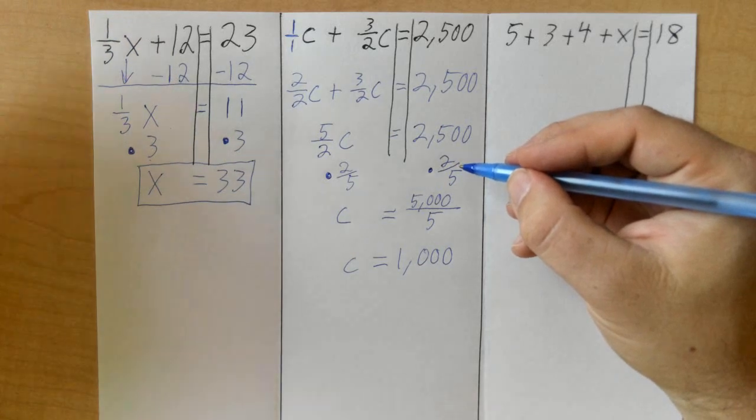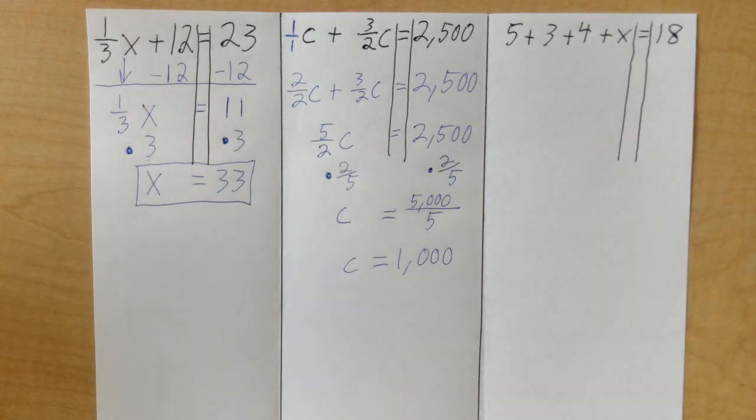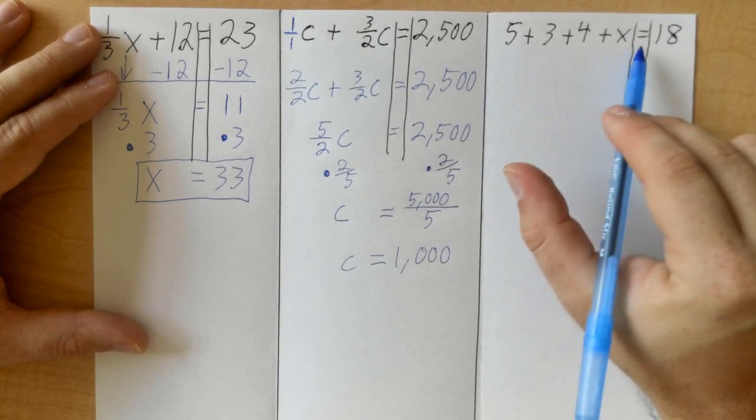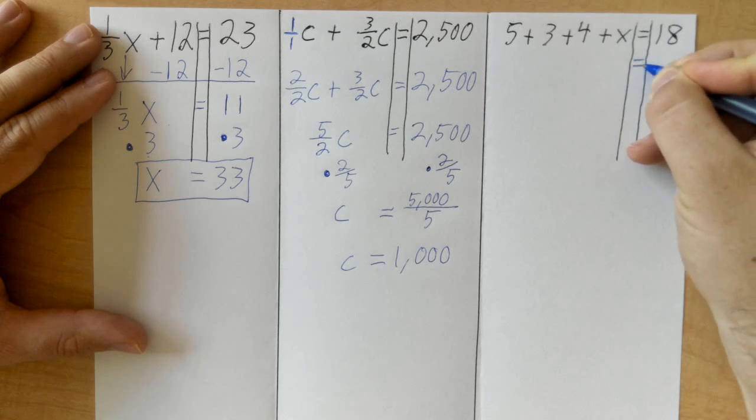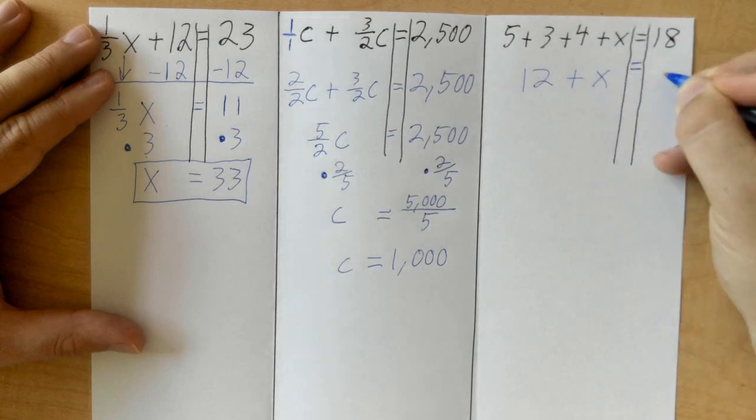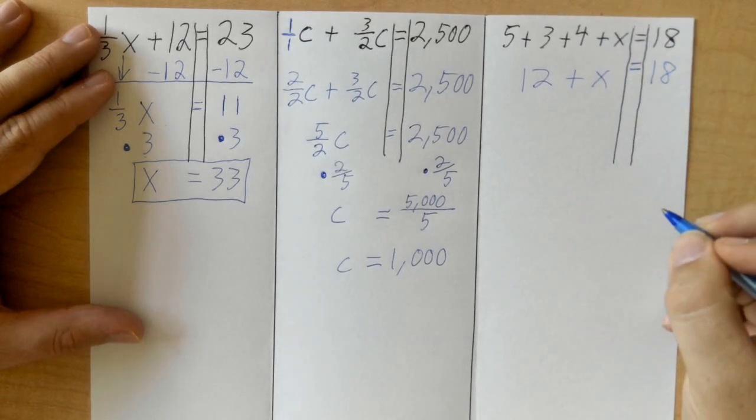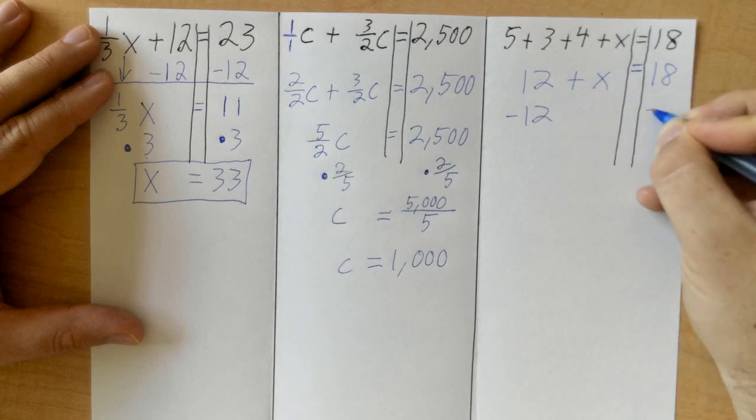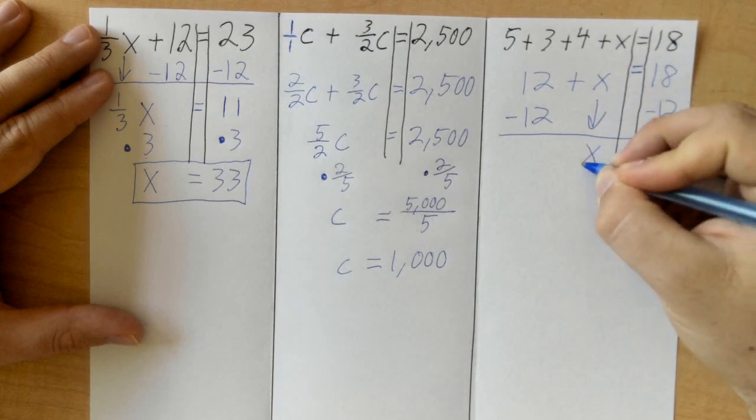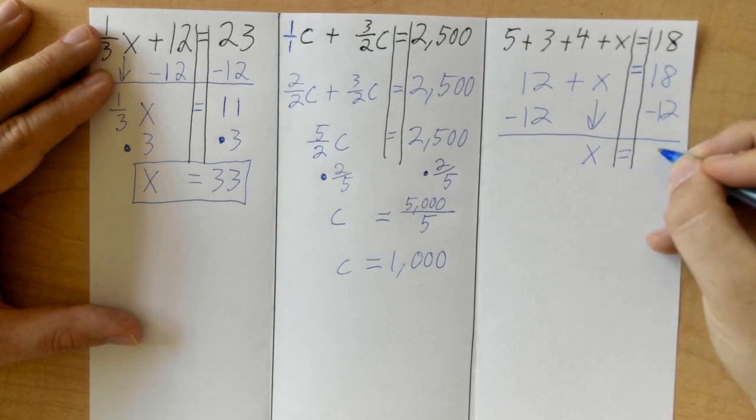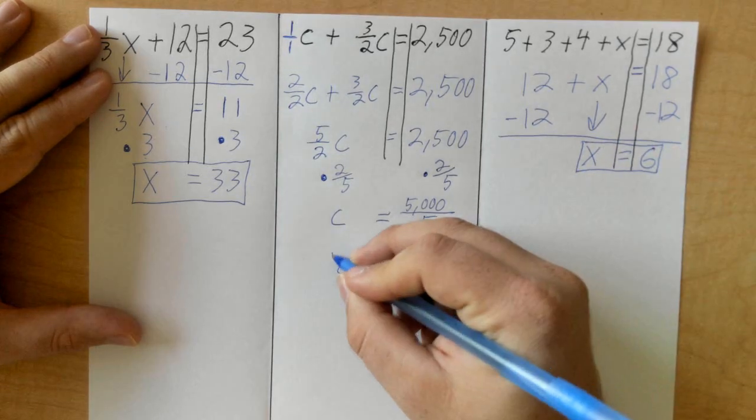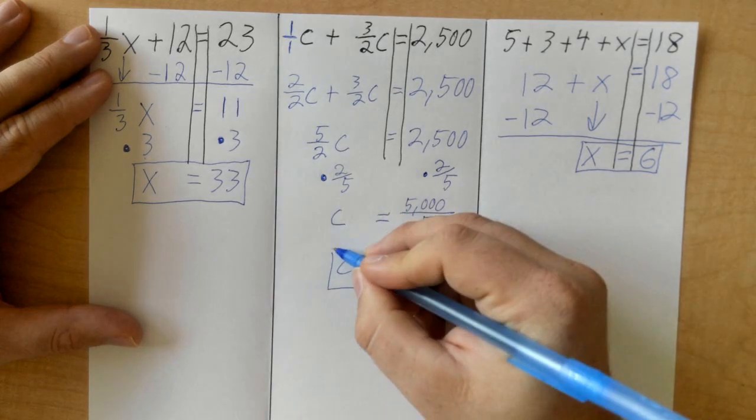All right, last one here. We got a bunch of numbers, so my first step is just gonna add all these numbers together. Five plus three plus four is 12, so that makes this equation a lot shorter. All I have to do to solve here is subtract 12 from each side, because 12 is being added to X. So we're left with just the X. 18 minus 12 is 6. That's how you solve the equations from the word problems video.